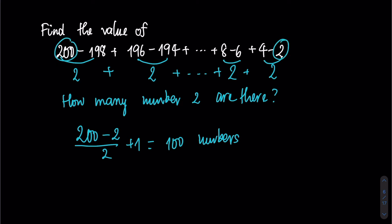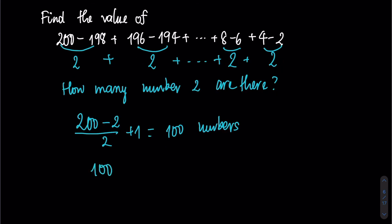Therefore, we will have 100 divided by 2, which is 50 pairs of numbers. So equivalent to 50 pairs of numbers, we have 50 number 2s.